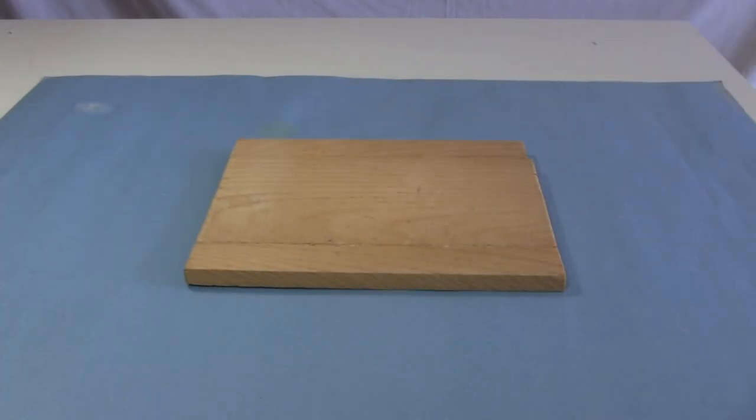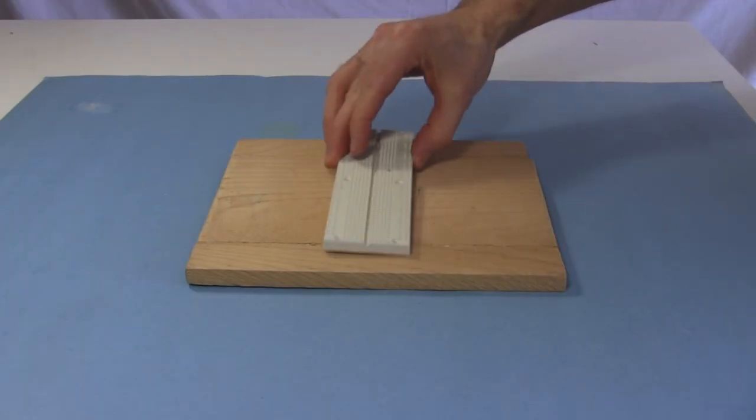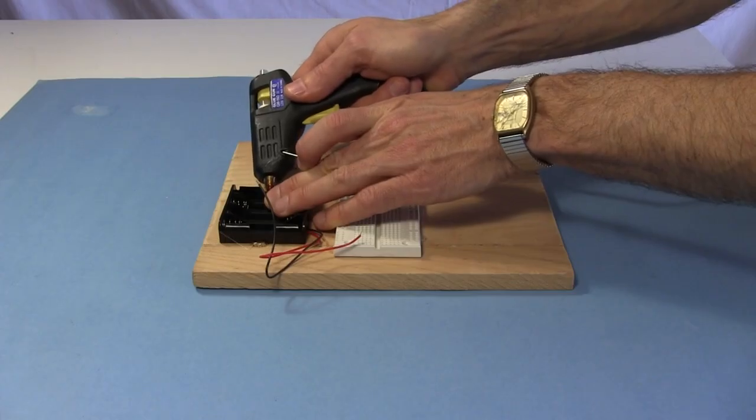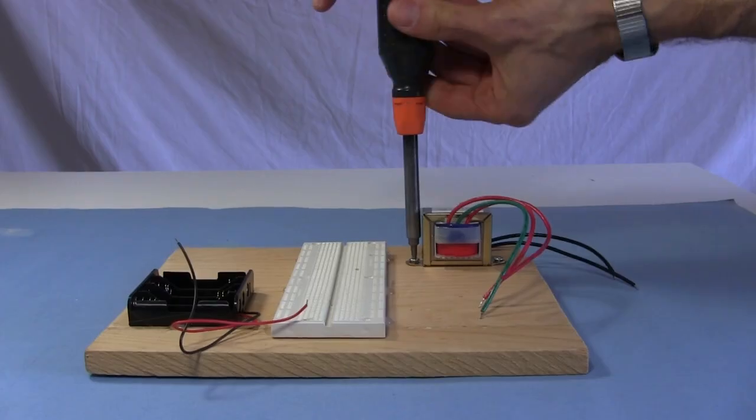First, I attach all the parts to a wooden board to make it portable. I hot glue the breadboard to the middle, then the battery holder, and lastly I screw on the transformer.